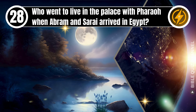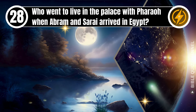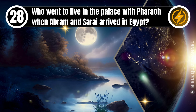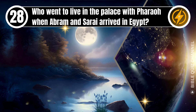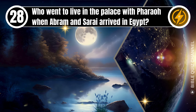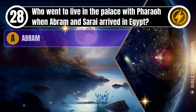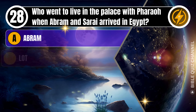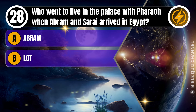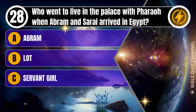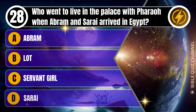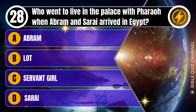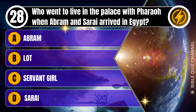Question 28. Who went to live in the palace with Pharaoh when Abram and Sarai arrived in Egypt? A. Abram. B. Lot. C. Servant girl. D. Sarai. You get 10 seconds.